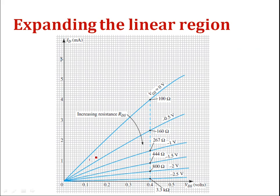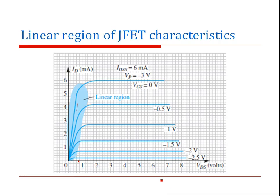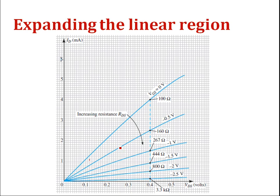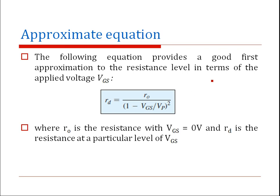If the linear region up to V_DS = 0.5 volt is expanded, the calculated resistance values are plotted: at VGS = 0V it is 100 ohms, at minus 0.5V it is 160 ohms, and at minus 2.5V it is 3.3 kilo-ohms. This FET can be used as a voltage controlled resistor because VGS controls the resistance of the device. It finds many applications in analog circuits, such as in non-inverting amplifier circuits using op-amps as a variable resistor, as discussed in Boylestad.